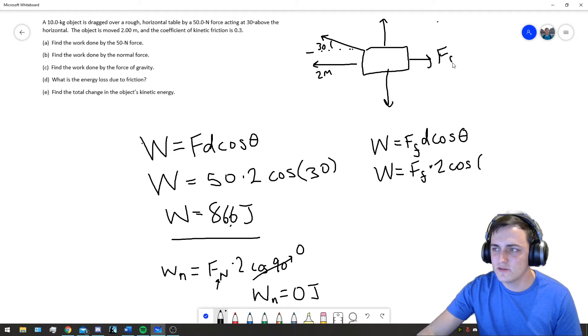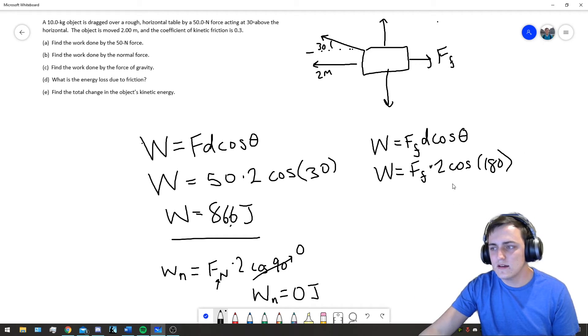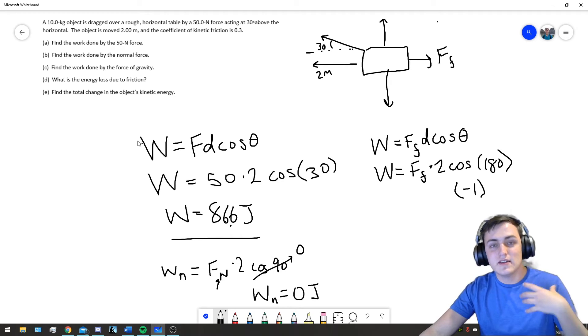And, what's our theta? Well, this is the friction force, and this is our displacement. The angle between them is 180 degrees. Cosine 180 is negative 1. So, we're going to end up finding negative work. We're going to get some negative value, right?